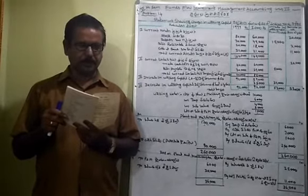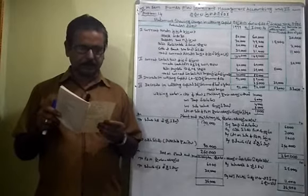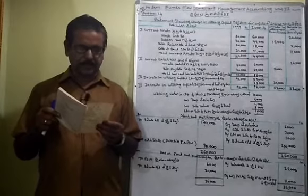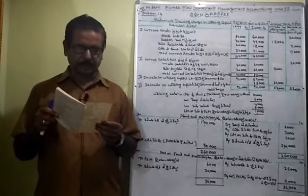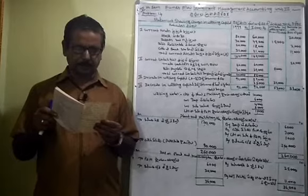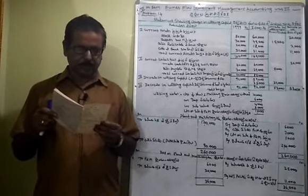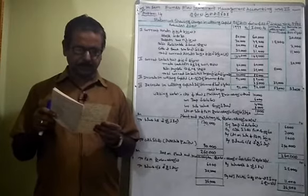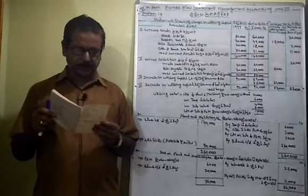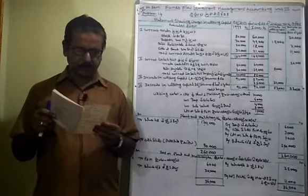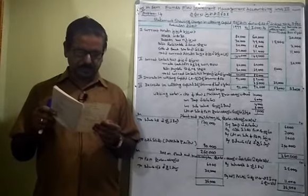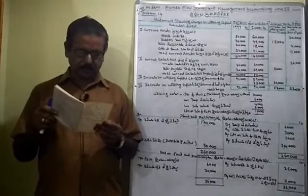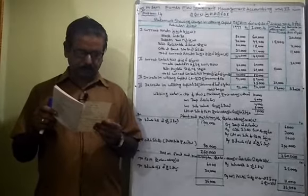The liabilities side: share capital is 2,000 for both years. General reserve is 20,000. Capital reserve is 40,000. P&L account is 20,000 and 10,000. 15% debentures, trade creditors, bills payable, provision for taxation 10,000 and 10,000, provision for taxation 25%.